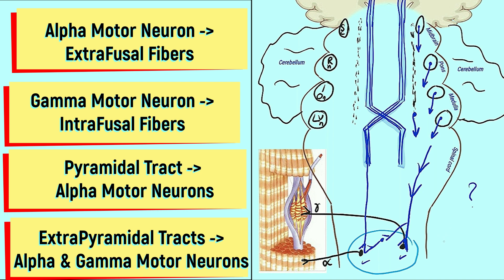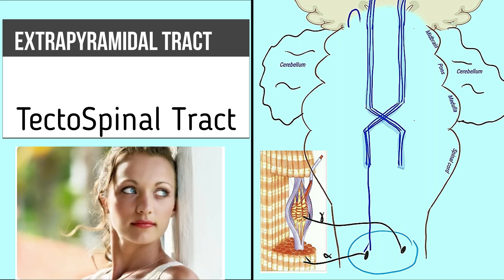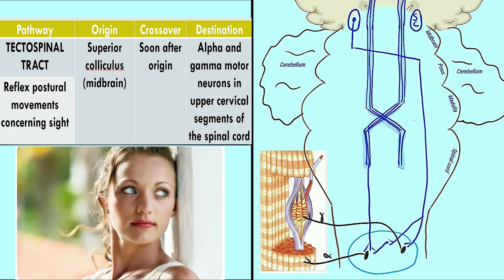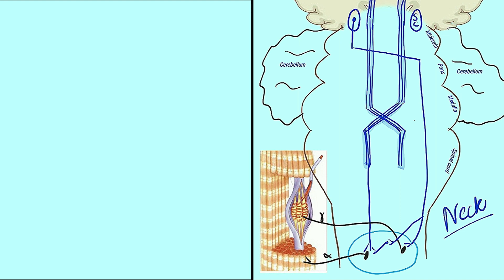The tectospinal tract: the nucleus is the superior colliculus, part of the tectum in the midbrain, which has connections with the visual pathways. A neuron from here crosses to the opposite side, descends, and reaches the ventral grey horn, where it has a direct connection with the gamma motor neuron and an indirect connection with the alpha motor neuron. This tract influences only the part of the corticospinal tract controlling neck movements. It is related to reflex postural movements concerning sight — for example, when we want to look at a light source, our neck moves in coordination, and this is the job of the tectospinal tract.